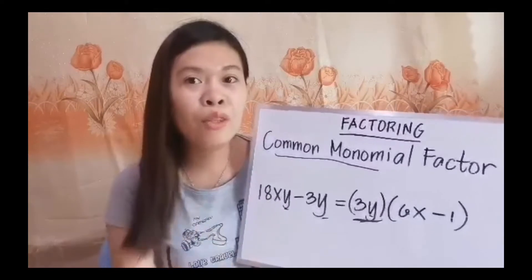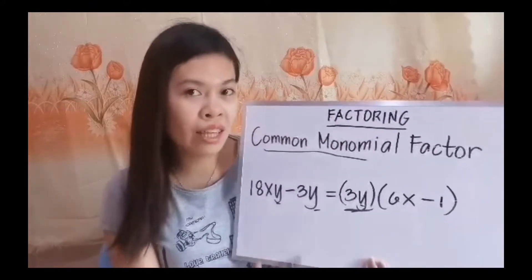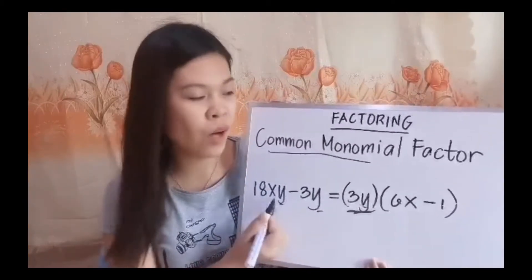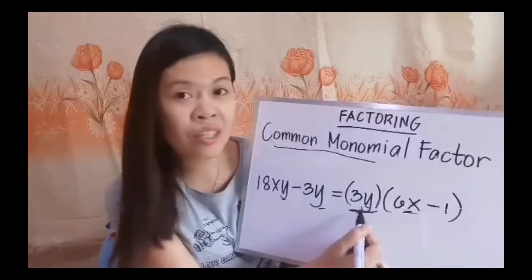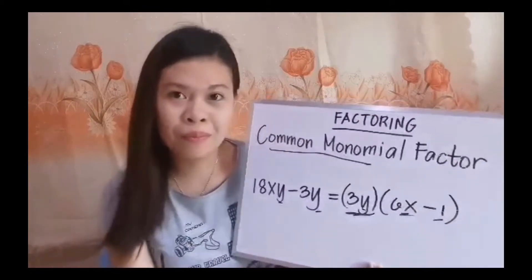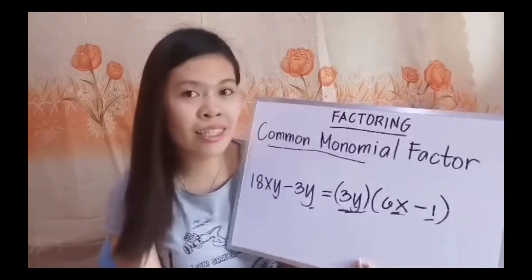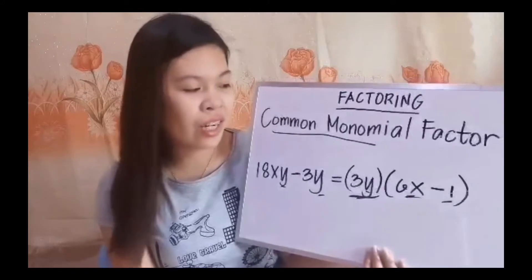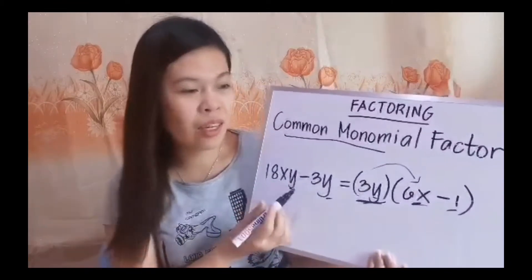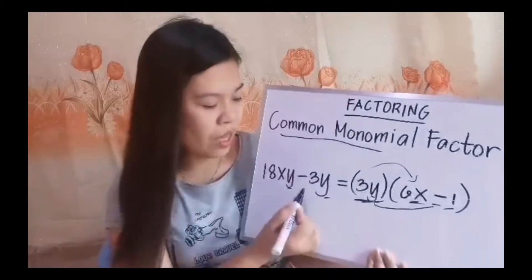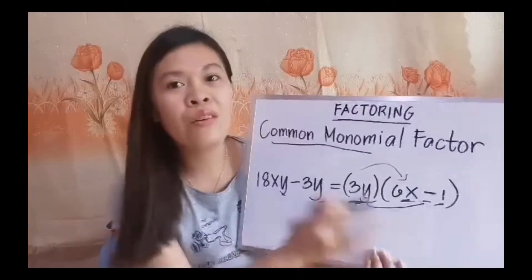After we get the common monomial factor, we now get the other factor by division. We have 18xy divided by 3y, which equals 6x. Next, negative 3y divided by 3y equals negative 1. So our final factors are 3y times the quantity of 6x minus 1. To check, we distribute: 3y times 6x equals 18xy, and 3y times negative 1 equals negative 3y. Since we recover our original polynomial, our factors are correct.